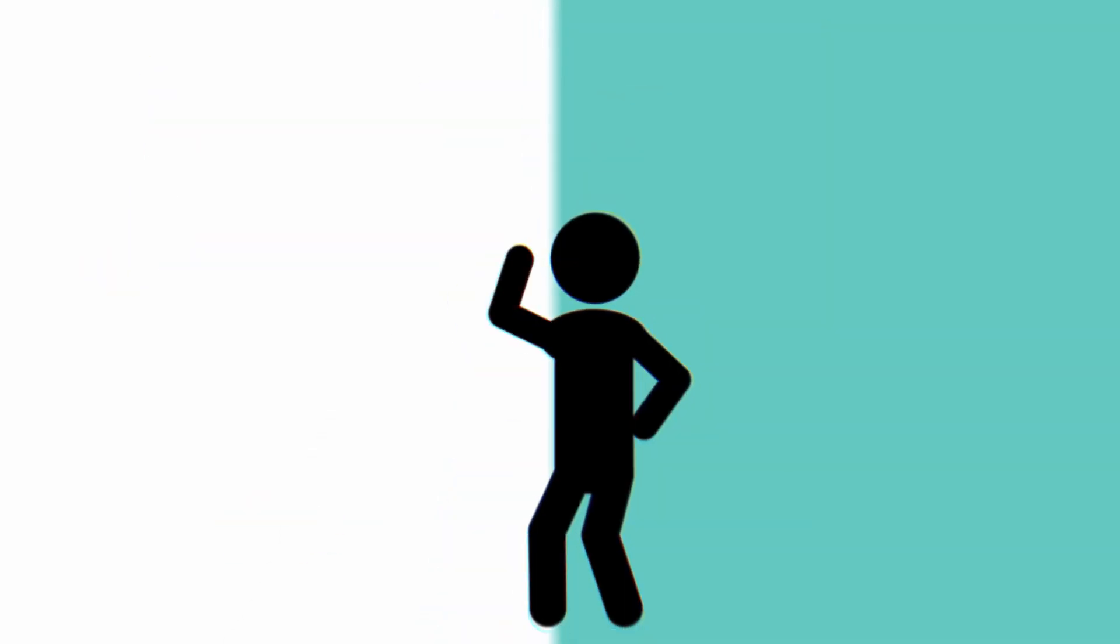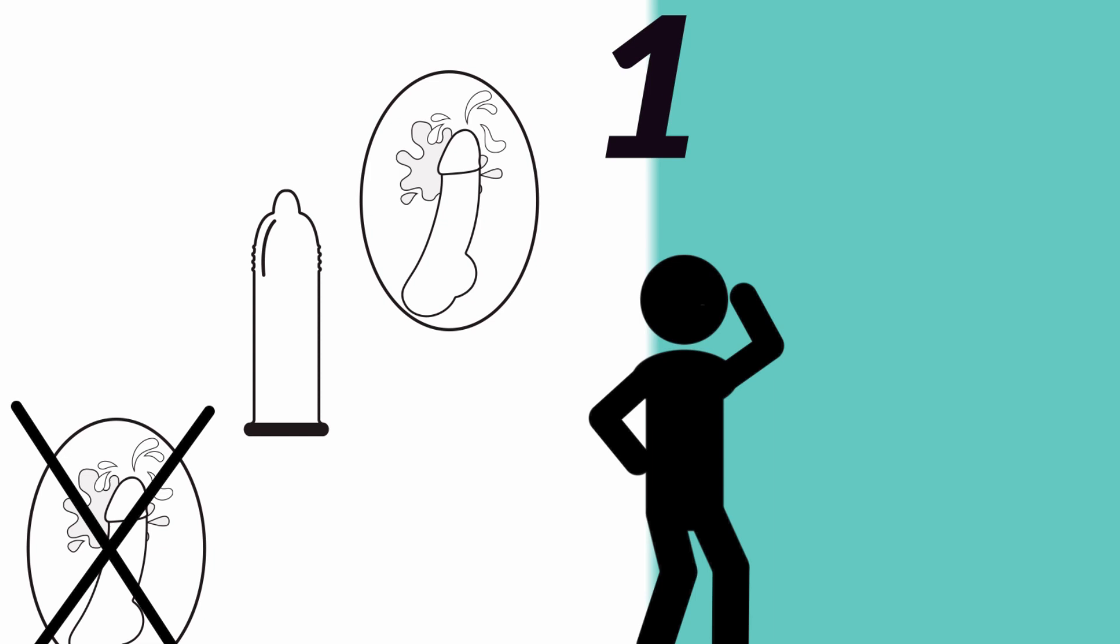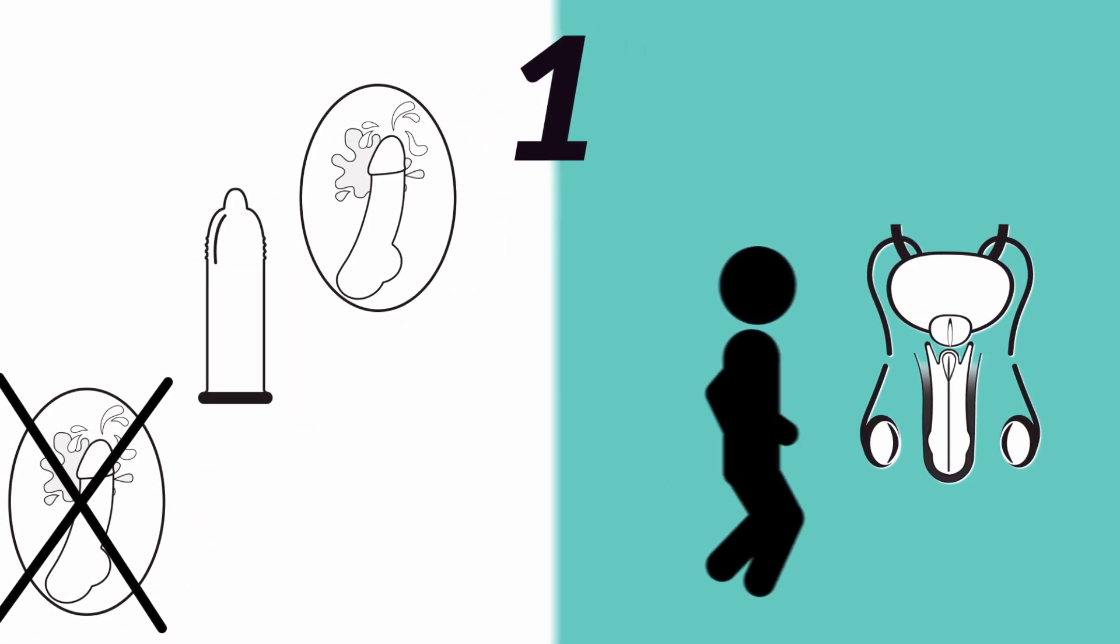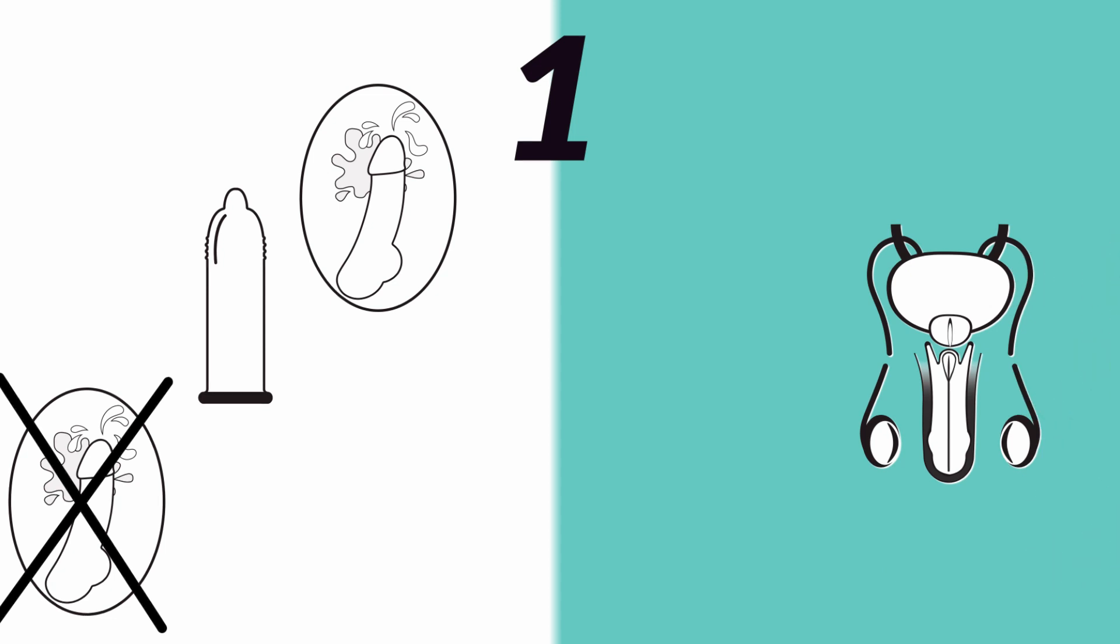Preparation. One: Make sure that you're certain of the decision. Although potentially reversible, it is considered a permanent method, so all alternative options must be considered.